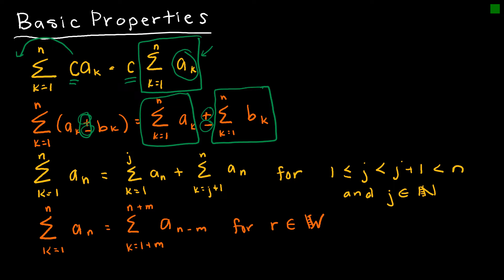The next property is helpful because it says if you have a summation going from one to n, it's okay to split it up into two different summations — one going to j, where j is some value between your lower and upper bounds. The next summation then starts at the very next number and goes to the original upper bound. Essentially, I can take the entire domain of my summation and split it into parts, and it still gives the same solution.